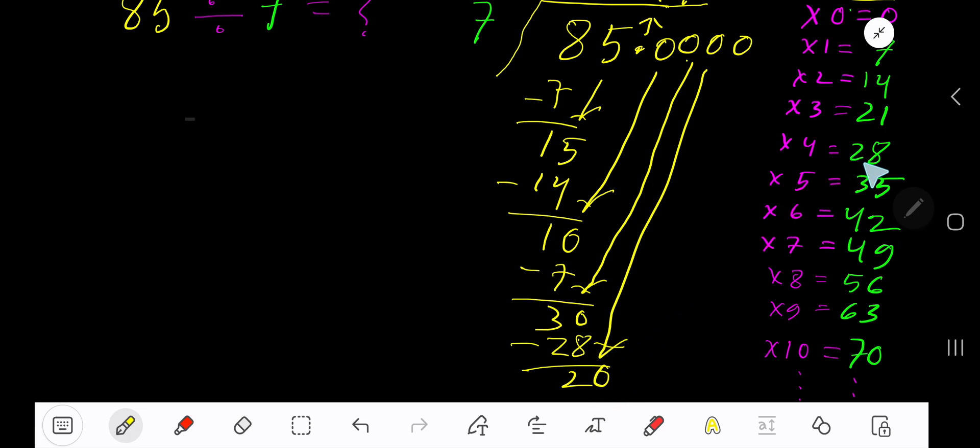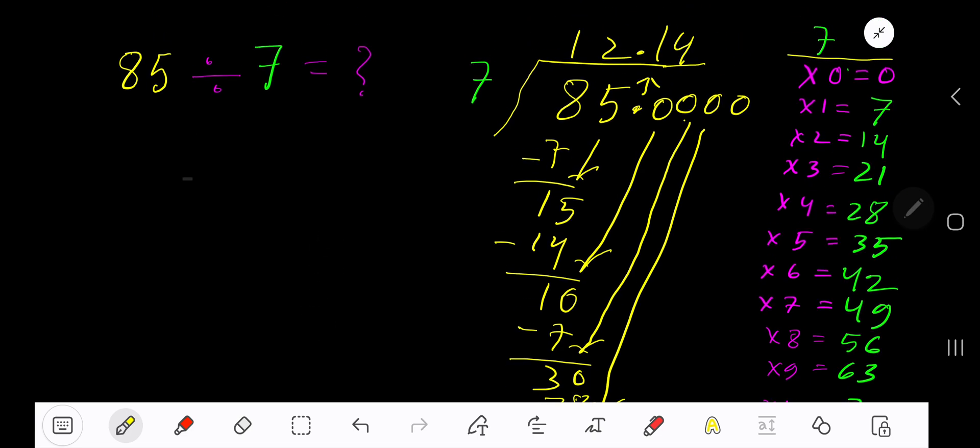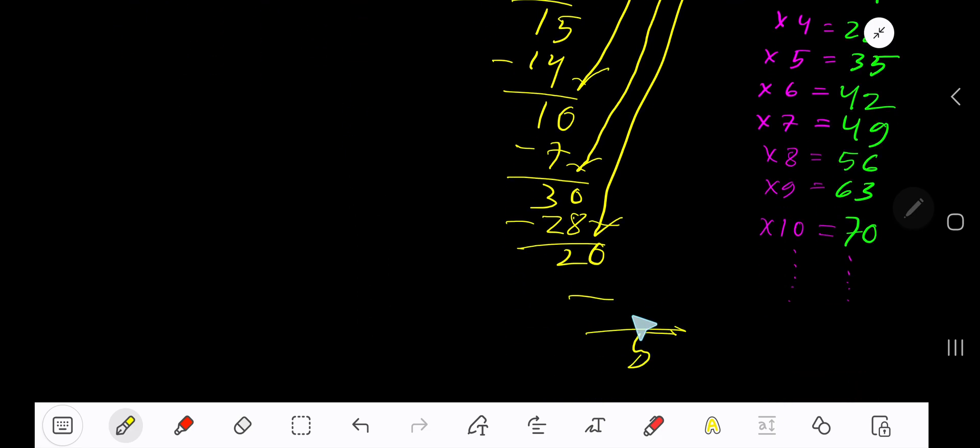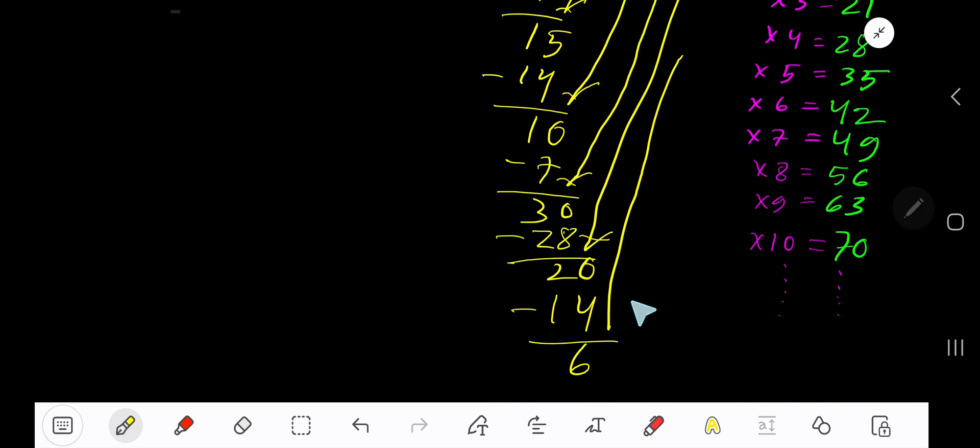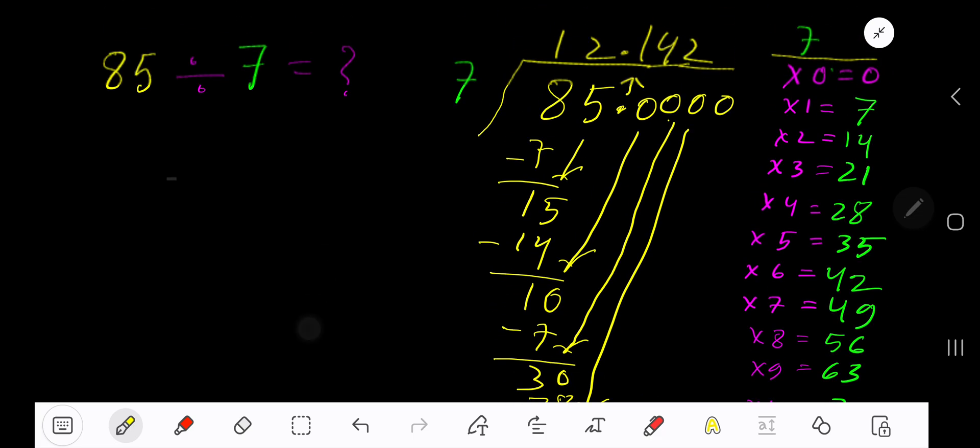7 goes into 20. 3 times 7 is 21, which is greater, so 2 times. 2 times 7 is 14. Subtract to get 6. Bring down another 0. You can bring down more zeros, but since we have gotten 3 places after the decimal, we can stop here. So our answer is 12.142 continuing.